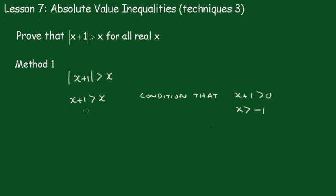Now you can see here, if you subtract x from both sides, we get 1 is greater than 0. Well, that is always true. So the condition holds that x must be greater than negative 1.